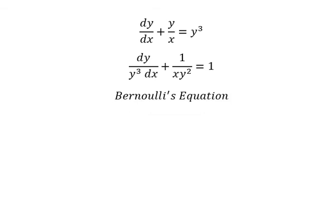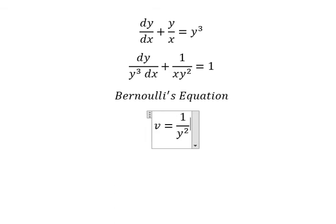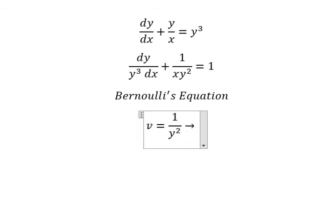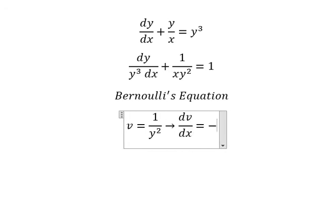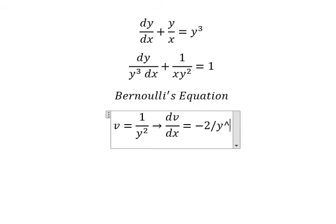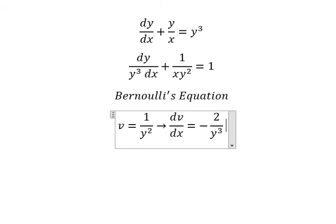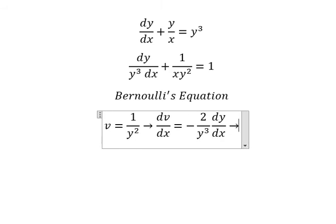So we have v equals to 1 over y squared. If we do the first derivative for both sides, we have dv over dx equals to negative number 2 over y to the power of number 3, dy over dx.